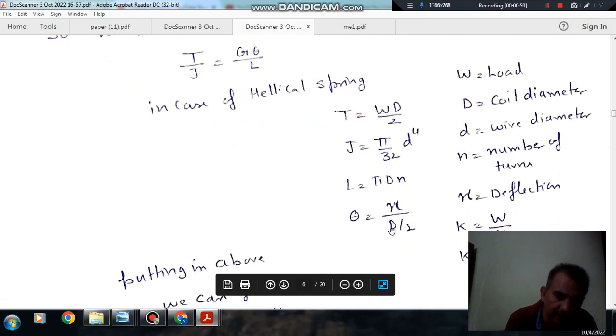And that is given by x/r, or D/2, where x is your deflection and D is your coil diameter.